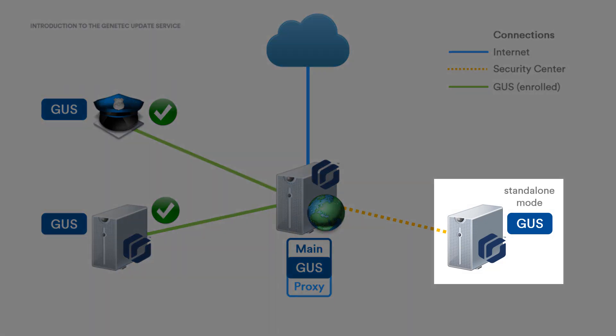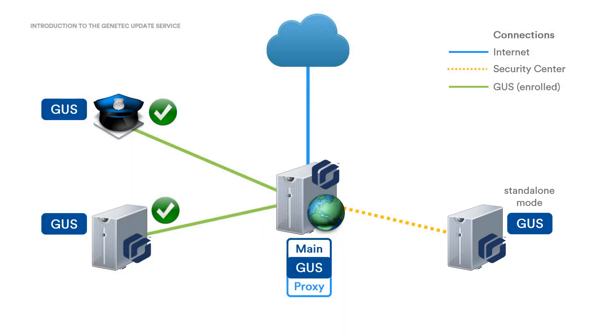The last way a machine can be running GUS is in Standalone mode. In this situation, a server or workstation is part of a system with the main GUS but has not been enrolled. The GUS will still function and will retrieve updates for the local machine if it has an Internet connection, but ideally we would want a machine in this state to connect to our main GUS machine.